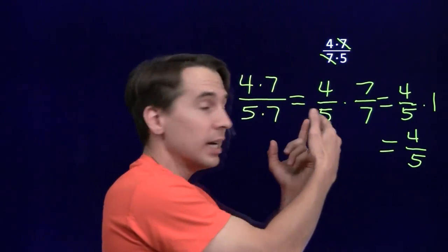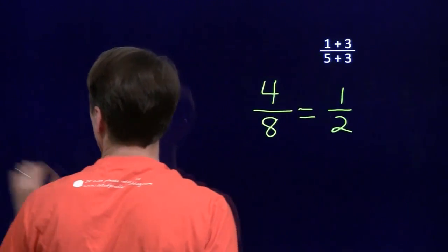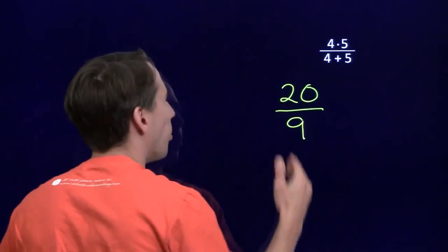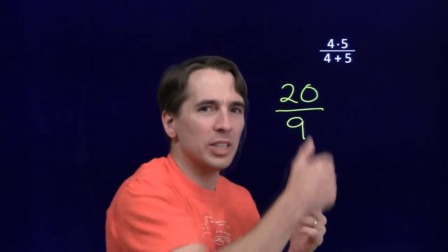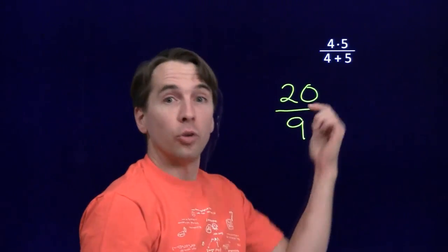So, two multiplications, we can rewrite it as something times 1. We can cancel. Two sums, no canceling. A product and a sum, still no canceling. I can't rewrite this as something times 5 over 5 or something times 4 over 4. Pull those out. I can't. All I can do is write 20 over 9, and we have to stop here because we're done.